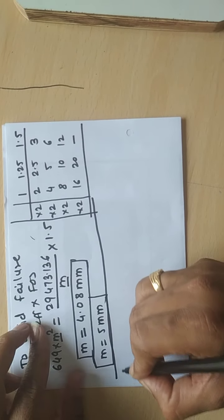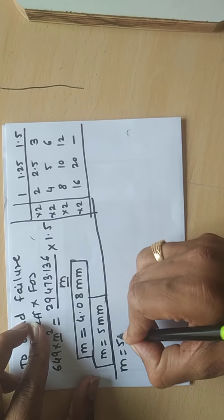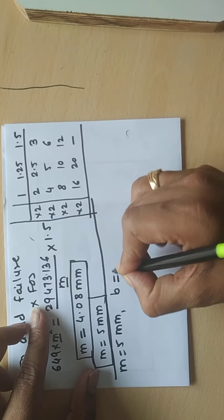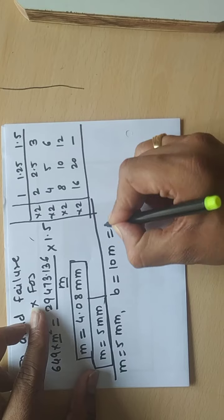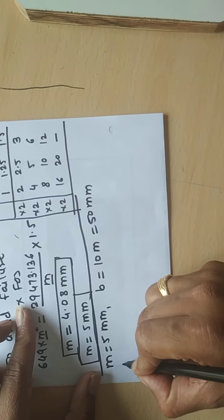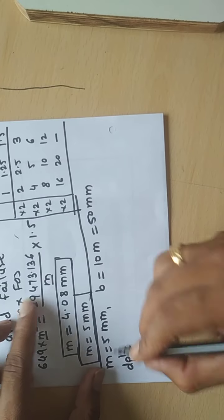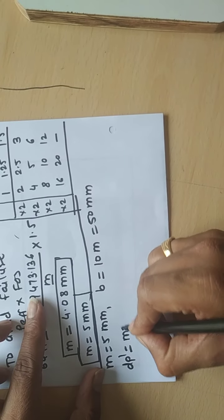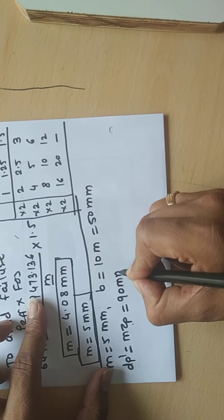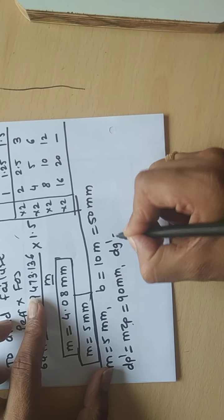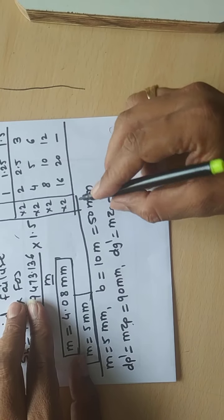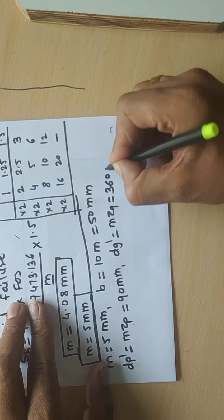Now find the standard dimensions with M = 5 mm. Face width B = 10 × M = 50 mm. Pitch circle diameter for pinion: DP = M × ZP = 5 × 18 = 90 mm. For gear: DG = M × ZG = 5 × 72 = 360 mm.